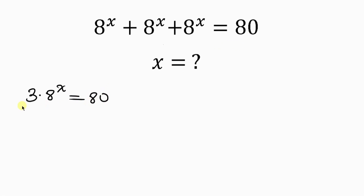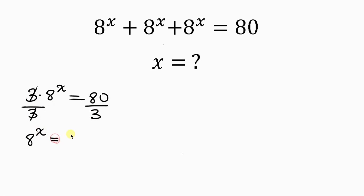Now we divide both sides by 3. So I'll divide the left by 3, I'll divide the right by 3. So this 3 can cancel out this 3, leaving behind 8 to the x to be equal to 80 over 3.